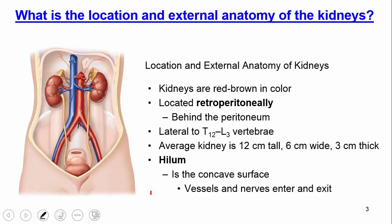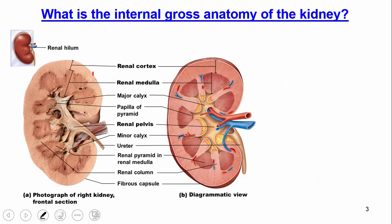What is the location and external anatomy of the kidney? It's retroperitoneal and a reddish-brown color. It also has a concave indentation on the medial side called a hilum, indicated right here. That is an area where vessels and nerves enter and exit the kidney — so the renal artery and the renal vein are going to be there.